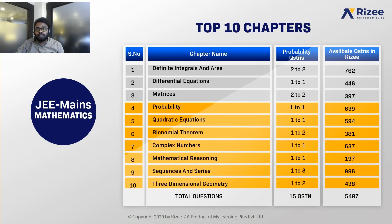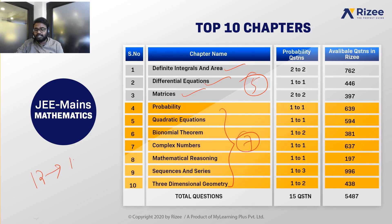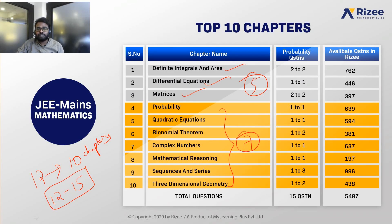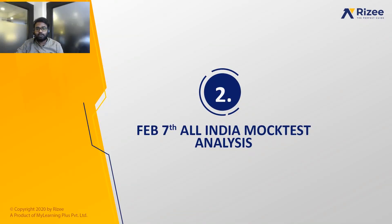Looking at JEE Mains Mathematics, from definite integrals and area, differential equations, and matrices — these three chapters give you five questions. From the remaining seven chapters, you have seven more questions, giving a total of 12 questions from 10 chapters every year. I request students to focus on these chapters, as you will have an assurance of 12 to 15 questions in your JEE Mains exam, improving your mathematics score. A practice set of 5,487 questions is available, customizable by easy, moderate, and difficult levels.